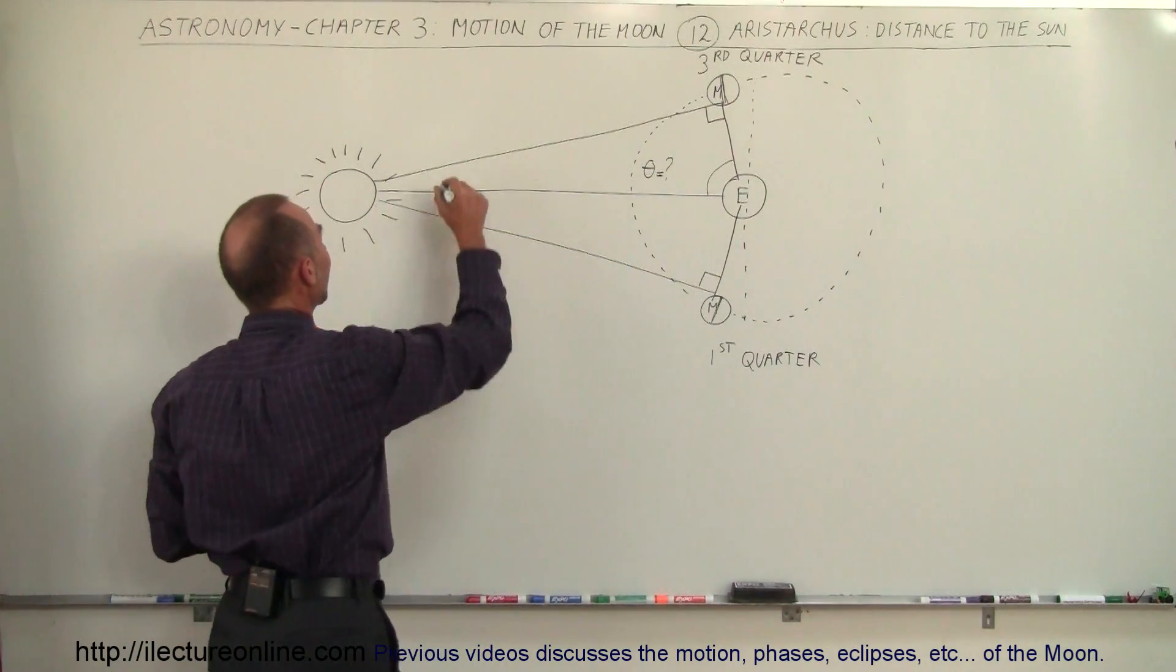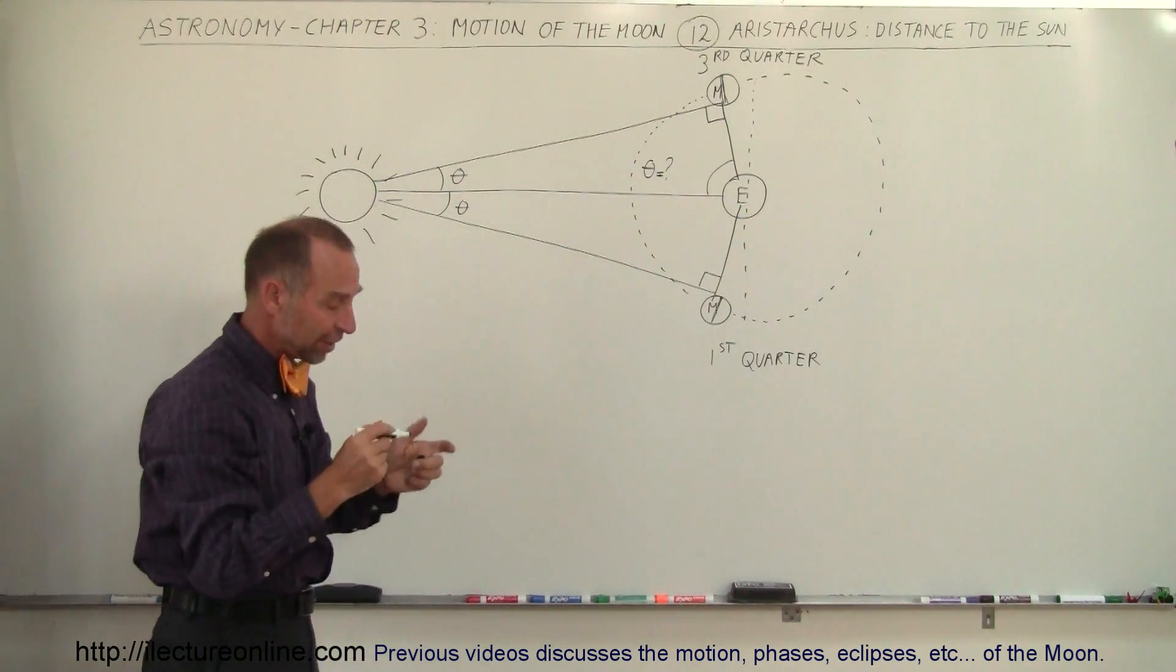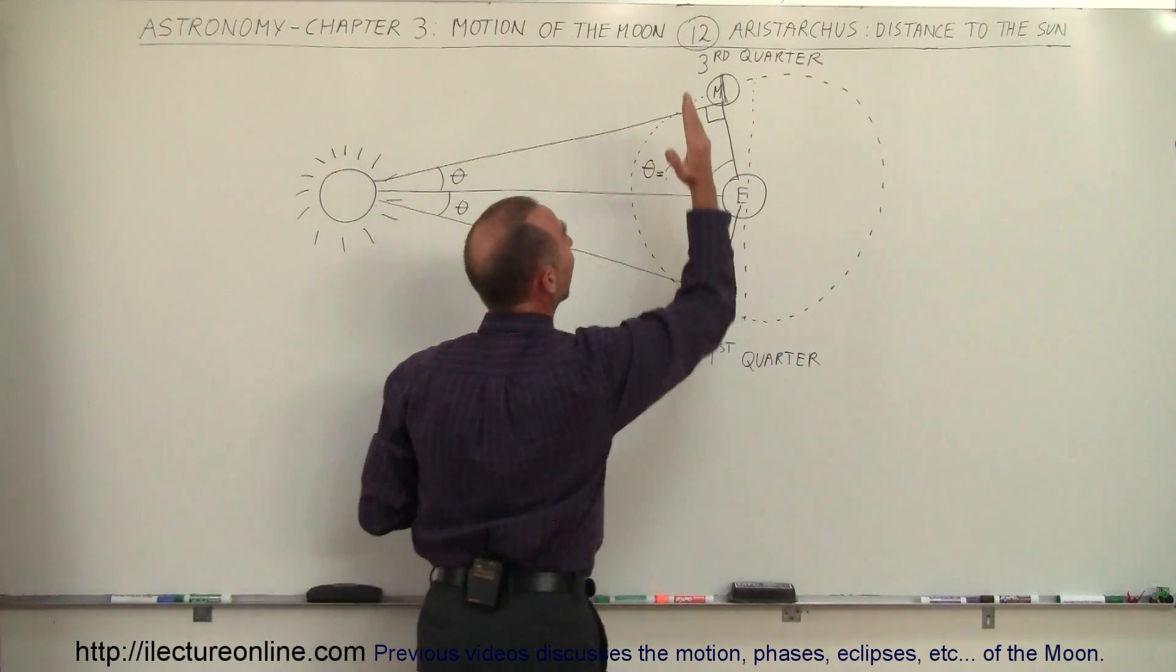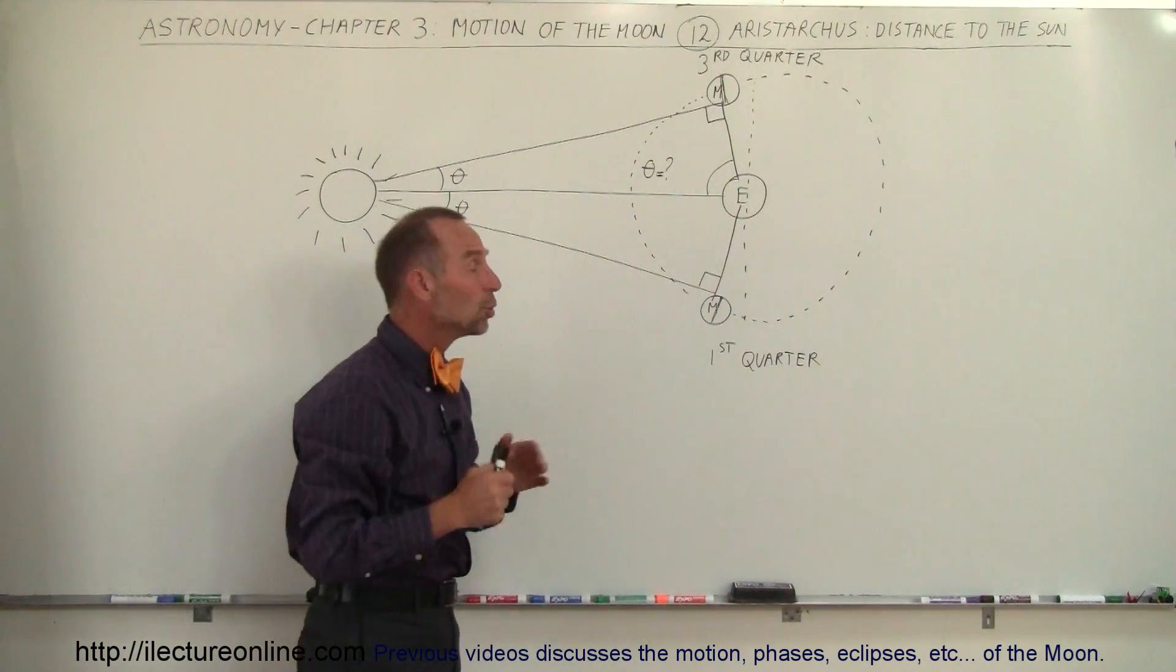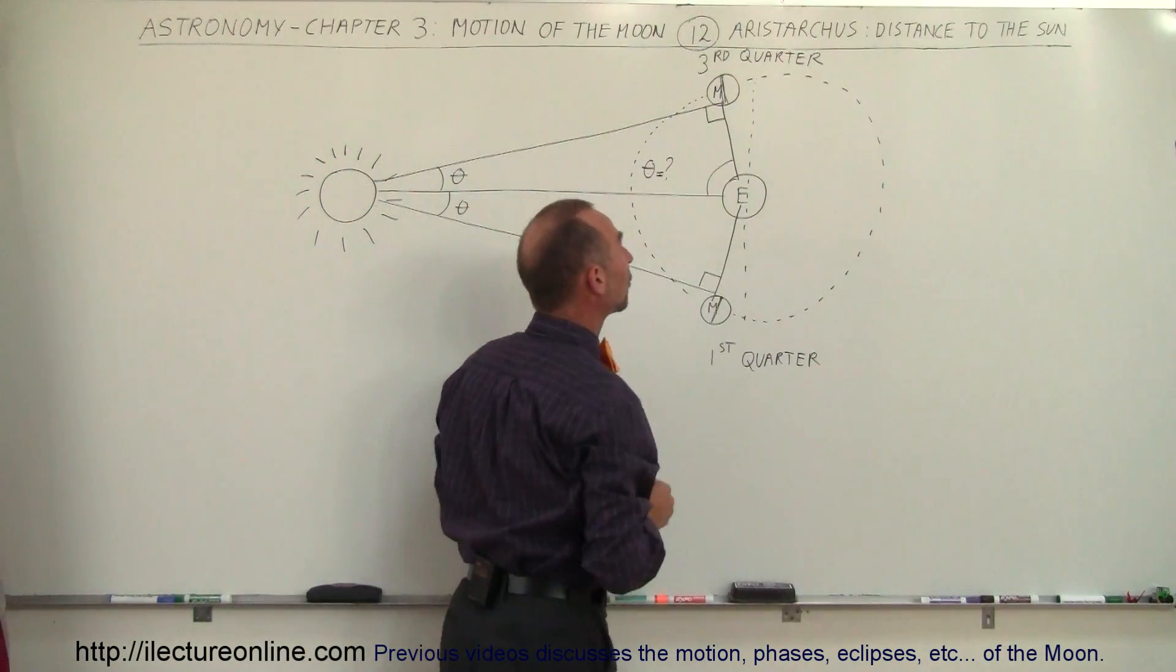He could figure out that this angle right here—let's call it theta—and this angle right here, call it theta, could be figured out by knowing when exactly the first quarter and the third quarter would happen for the moon. Knowing it wasn't exactly there, but a little bit before that point and a little bit after that point over here.